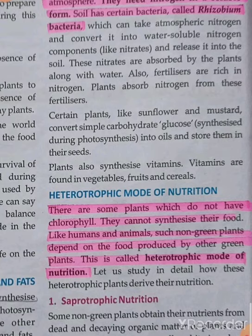I hope you understood how plants synthesize proteins and obtain nitrogen from the soil. The next topic is the heterotrophic mode of nutrition. These organisms do not have chlorophyll, so they cannot synthesize their own food. Like humans and animals, certain non-green plants also depend on other organisms for nutrition, and this is called heterotrophic mode of nutrition.